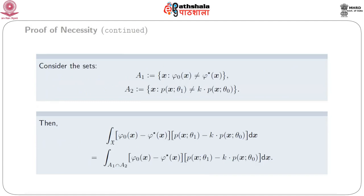Now, we consider the sets: A-1 equal to the set of those x for which phi-naught(x) differs from phi-star(x), and A-2 equal to the set of those x for which p(x; theta-1) differs from k times p(x; theta-naught). Then the integral of [phi-naught(x) minus phi-star(x)] times [p(x; theta-1) minus k times p(x; theta-naught)] over script X is nothing but the integral of the same expression over A-1 intersection A-2. In the intersecting part of A-1 and A-2, both phi-naught(x) and p(x; theta-1) differ from phi-star(x) and k times p(x; theta-naught) respectively.